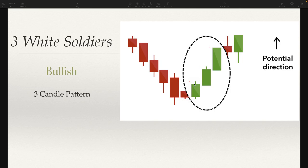What we're looking for is each of these candles closing higher than the previous candle. We're looking for this to happen on a downtrend. So we see this downtrend and now we see one, two, three nice big long green candles. We want to see these candles with little to no wicks. If we see a little bit of wicks that's okay, but for the most part we don't want to see too many wicks on this particular candle formation.